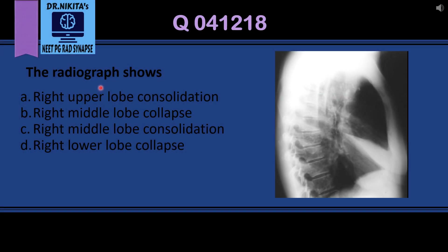The radiograph shows something important: if you get a question like this in your exam, the first thing you should do is look at the options very carefully to analyze what the examiner is trying to ask. Here, the examiner basically wants to know which lobe is involved and whether it is consolidation or collapse.